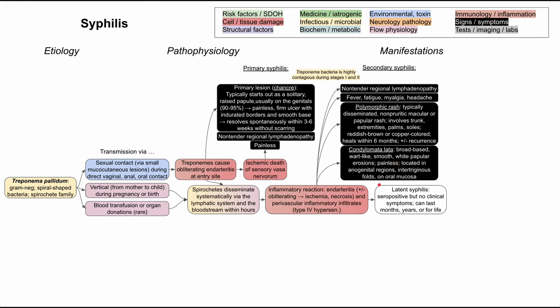Syphilis can then enter a latent phase where it can still be present in the patient's blood. The patient is still seropositive but doesn't have symptoms, and it's possible that the disease ends here — some patients never progress to tertiary syphilis. Others might progress to tertiary syphilis within months or years, but it's variable from patient to patient. Tertiary syphilis can affect many different organ systems.